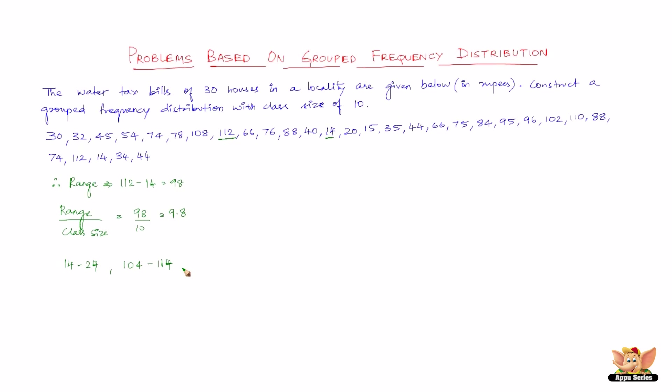Here we form classes by exclusive method. We have discussed the two kinds of classes that we can make, that is inclusive method and exclusive method. Here we are going to follow the exclusive method. In the class 14 to 24, 14 is included but 24 is excluded. That is the exclusive method. Similarly, in other classes, the lower limit is excluded and the upper limit is excluded.